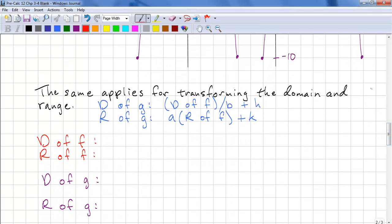So the rules for applying a transformation to the domain and range is the same as transforming a point. So we have the domain of f divided by b plus h. We have the range of g as a times the range of f plus k. So in this example, we have -2 to 2 and 0 to 4. So our domain is -2 divided by a half plus 3. It's less than or equal to 3. It's less than or equal to x. It's less than or equal to 2 divided by a half plus 3. And that's -1 to 7.